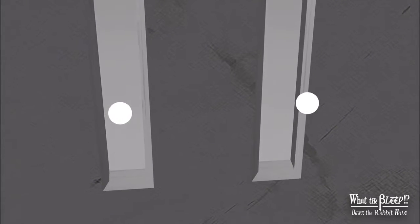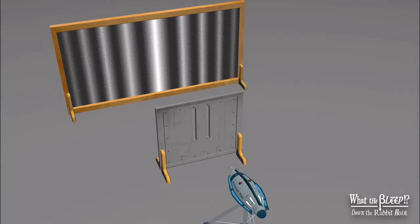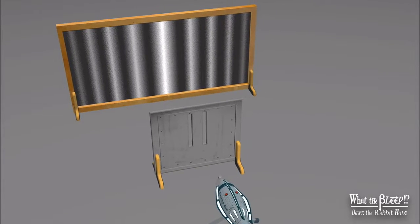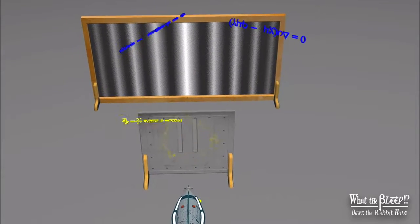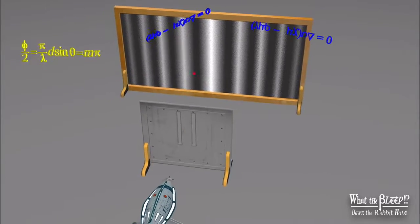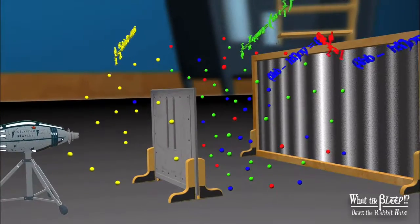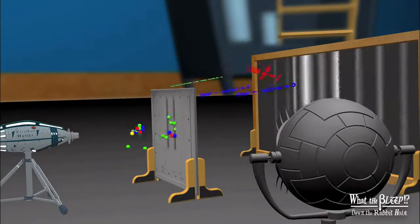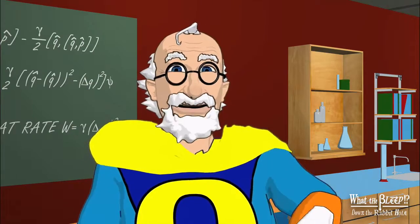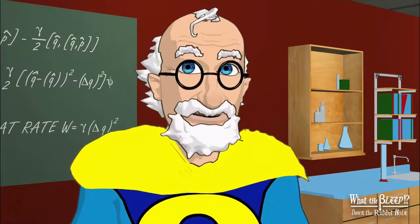But mathematically, it's even stranger. It goes through both slits, and it goes through neither, and it goes through just one, and it goes through just the other. All of these possibilities are in superposition with each other.